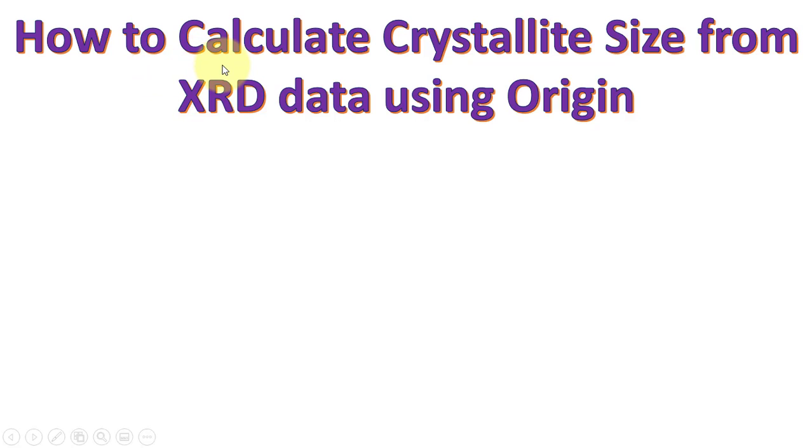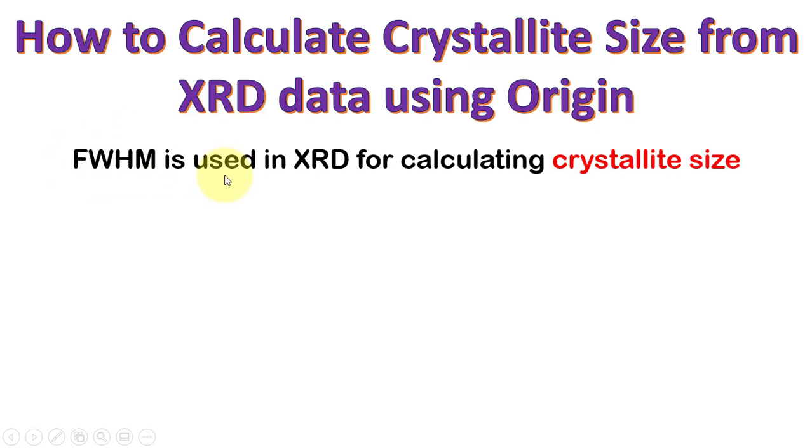In this video we will discuss how to calculate crystallite size from XRD data using Origin. From the XRD graph we will calculate the full width at half maximum and then utilize this value to calculate the crystallite size.